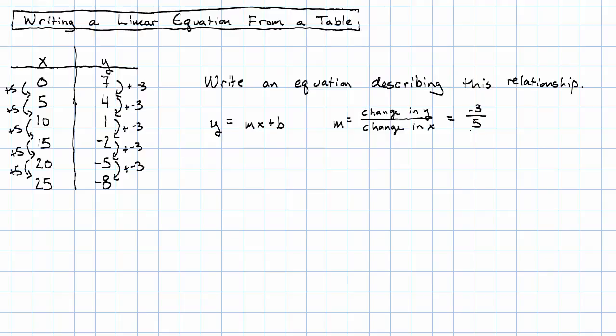So much for m. B is the number that is the value of y when x is 0. So in this example, b is 7. Okay, we can write the equation for this table. y is negative 3 fifths x plus 7.